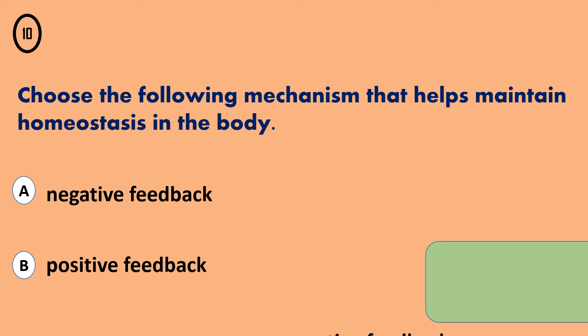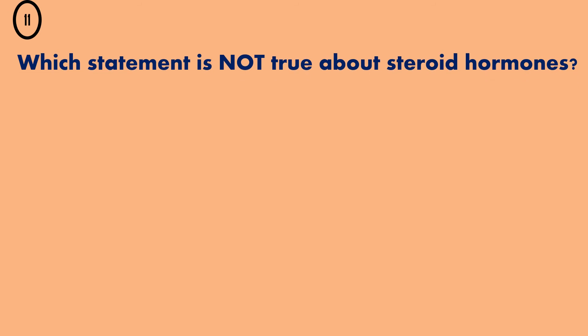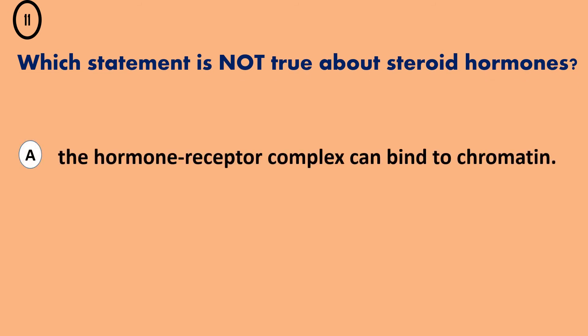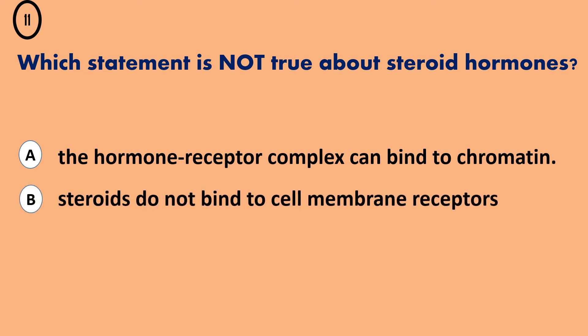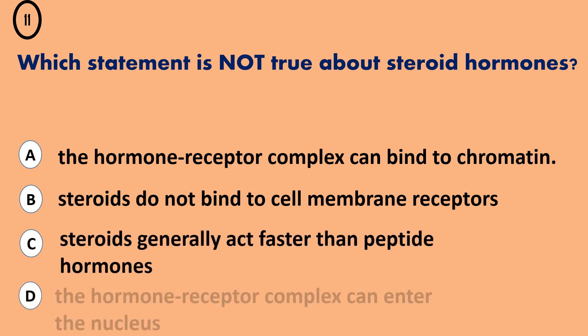The correct answer is... Question 11. A - The hormone receptor complex can bind to chromatin. B - Steroids do not bind to cell membrane receptors. C - Steroids generally act faster than peptide hormones. D - The hormone receptor complex can enter the nucleus.